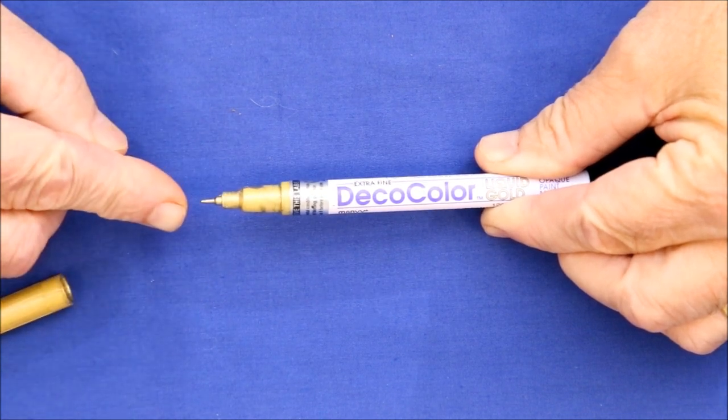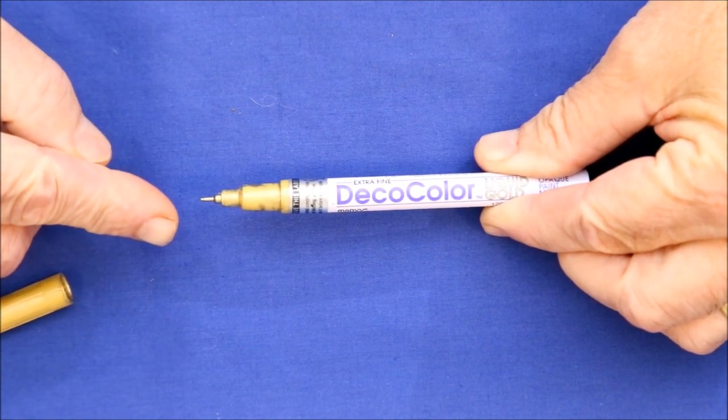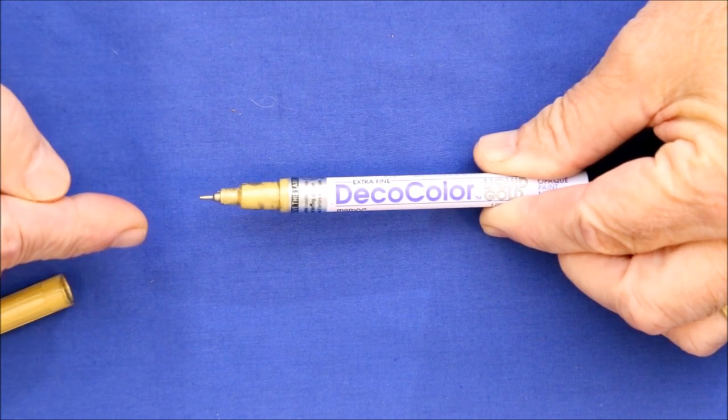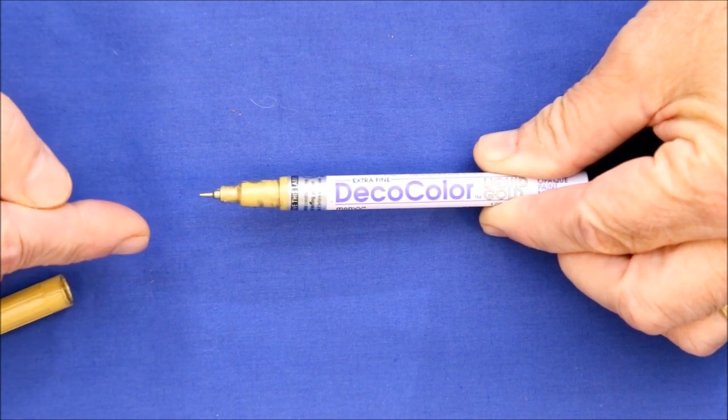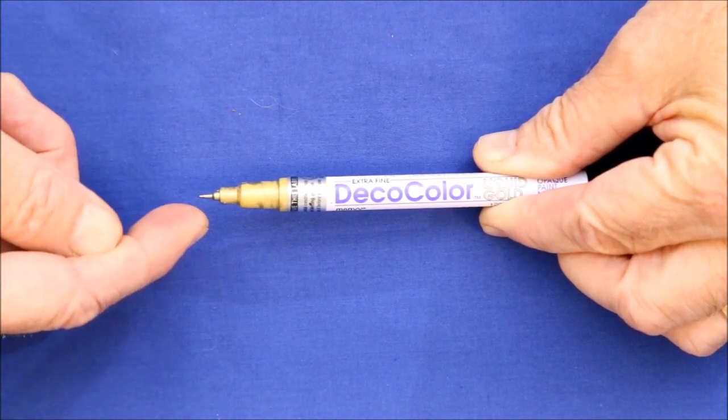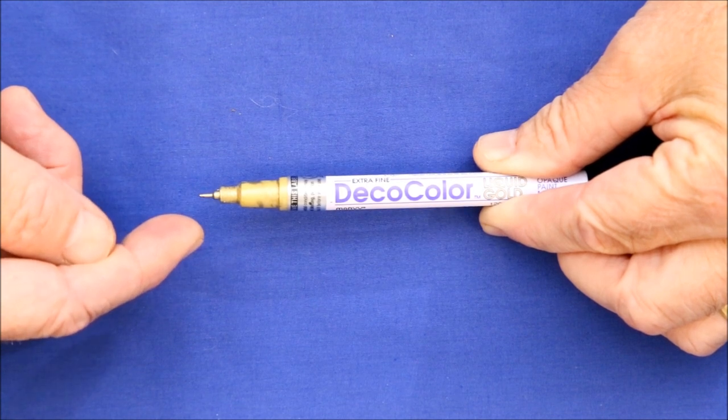Although it comes with a very fine tip, the paint's viscosity is such that it tends to spread. It's hard to draw a line finer than two millimeters, which is too big for fine detail. Another problem is that once in a while, the paint will flow out of the tip and create a puddle, which is a real mess to clean up.